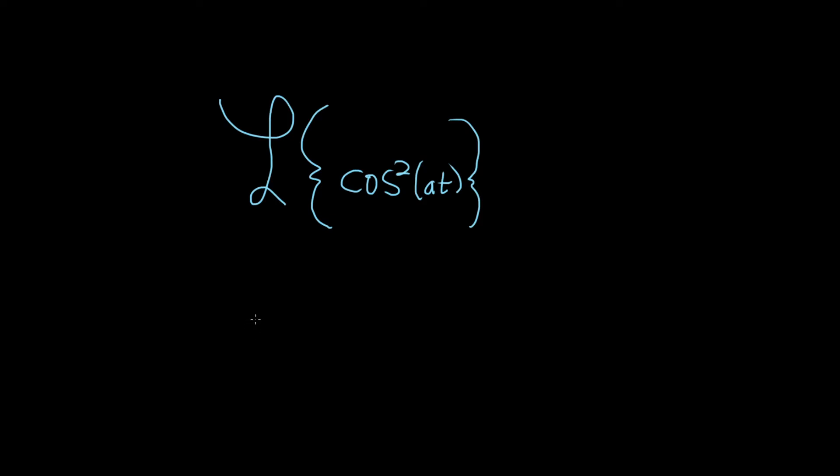In this problem, we have to find the Laplace transform of cosine squared of at. There's an identity we can use: whenever you have cosine squared of x, that's the same thing as 1 plus cosine of 2x divided by 2.